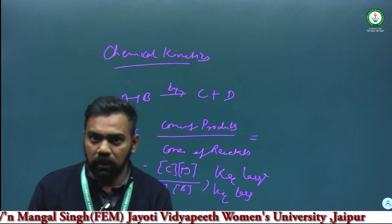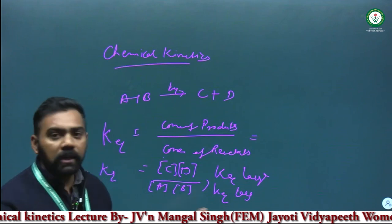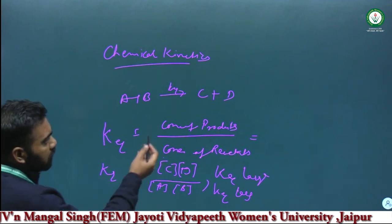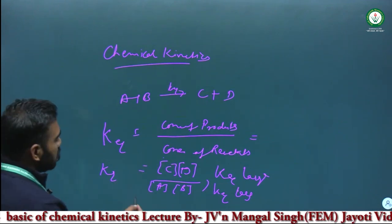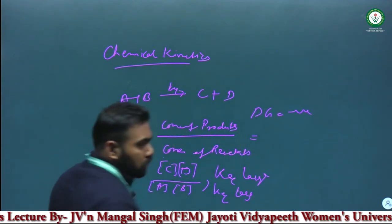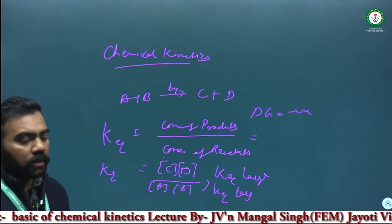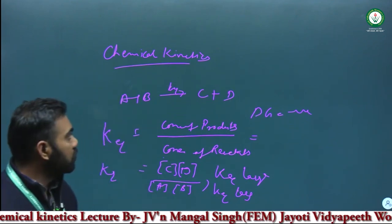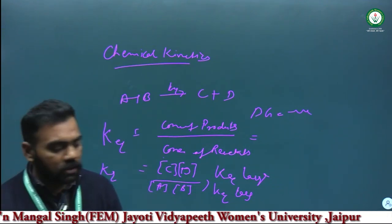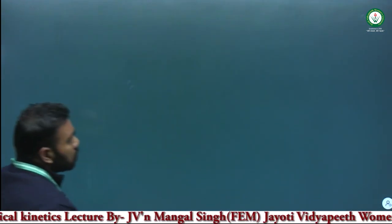From this conclusion using K equilibrium, we cannot tell about the reactions for a particular time period. In thermodynamics, for a spontaneous reaction, delta G must be negative. But if we want to know how much of reactants A and B are converted into products C and D in a particular time period, we have to deal with chemical kinetics.